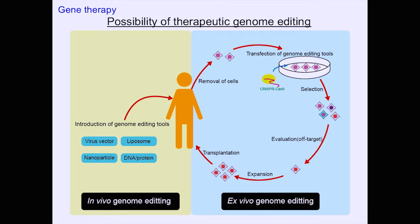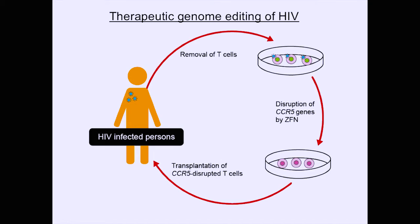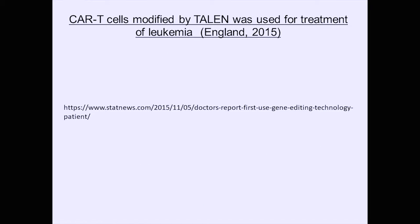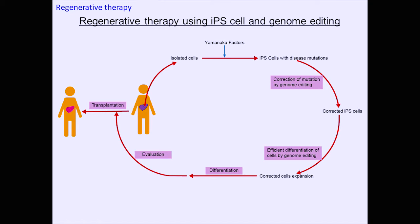If there are concerns about in vivo use, ex vivo genome editing can be performed — taking cells out, editing them, selecting the good ones, and using them for treatment. This approach is being used for cancer treatment and AIDS. For HIV, immune cells are taken from infected patients, genome-edited to make them non-susceptible, and then transplanted. Cancer-specific targeted cells can also be created this way.